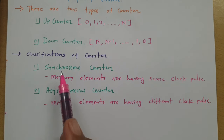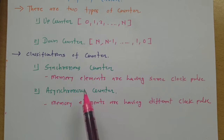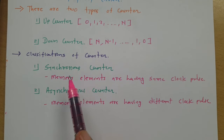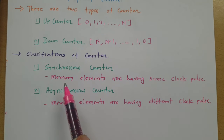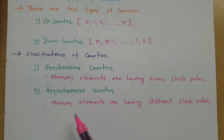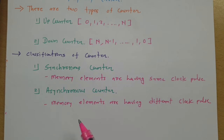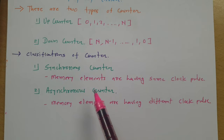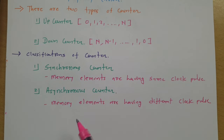In a synchronous counter, we provide the same clock pulse to all flip-flops in the circuit. In an asynchronous counter, we provide a clock pulse to only one flip-flop and the output of that flip-flop is connected as the clock pulse to the next flip-flop. That is how the connections are made in an asynchronous counter, and we will see that step by step when we design one.